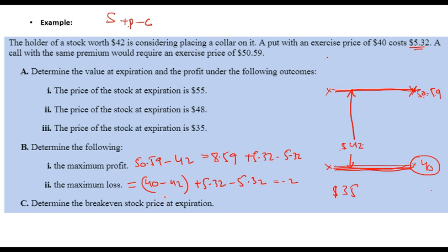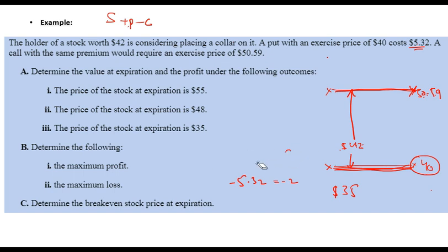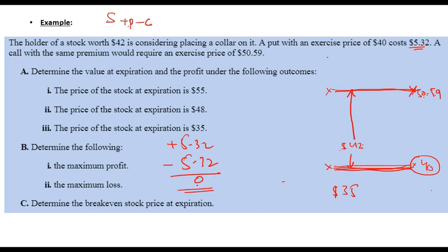What is the break-even price? At initiation, your net gain or loss is zero because you received $5.32 from the call option and paid $5.32 for the put option, so net benefit is zero. That means you break even at $42 — the starting stock price.